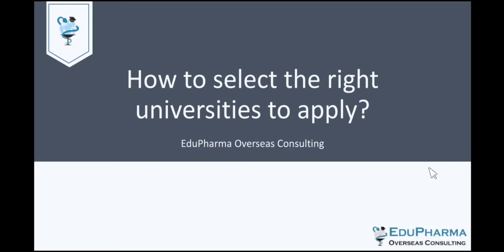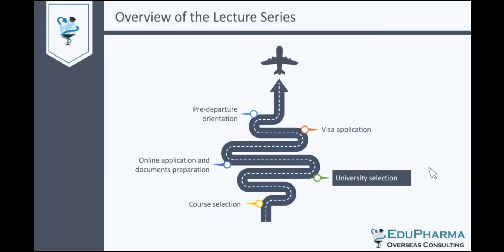Hello and welcome to the second lecture in this series, which is on how to select the right universities to apply. This is the overview of the lecture series and we are at the second stage of university selection. We have already discussed how we can go about selecting the different courses, and by now I hope you would have selected the right course that you would want to study.